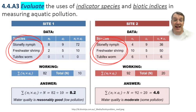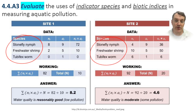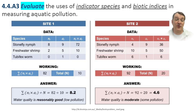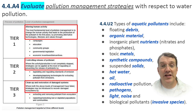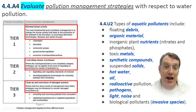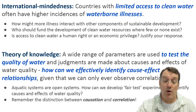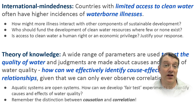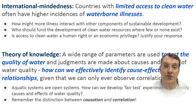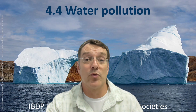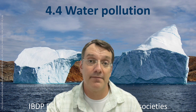By surveying these and other indicator species, scientists can assess water quality without relying solely on chemical tests. The presence, absence, and relative abundance of these organisms provide a time-integrated picture of water quality that spot chemical sampling might miss. Finally, remember that water pollution is inherently an international issue. Water systems don't respect political boundaries, and addressing pollution requires global cooperation. This raises important questions about responsibility, equity, and the relationship between environmental and social systems. That's it for ESS topic 4.4, water pollution.